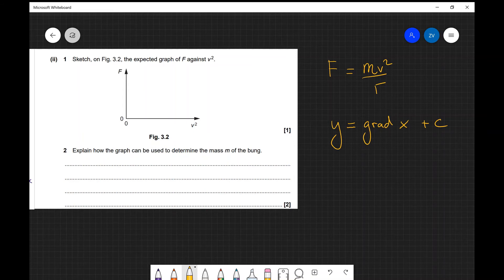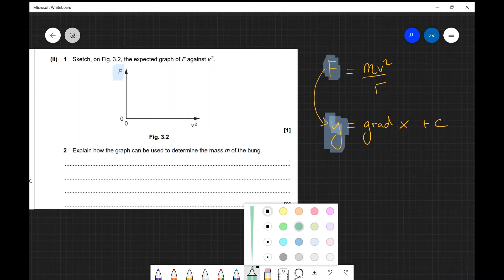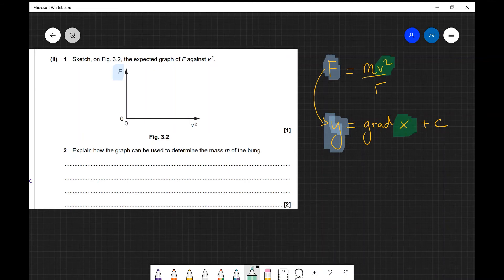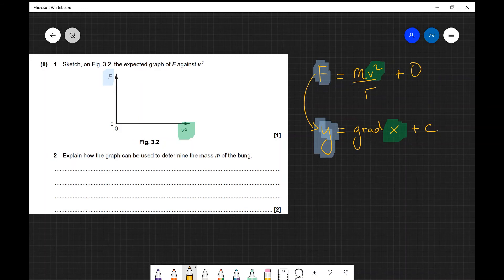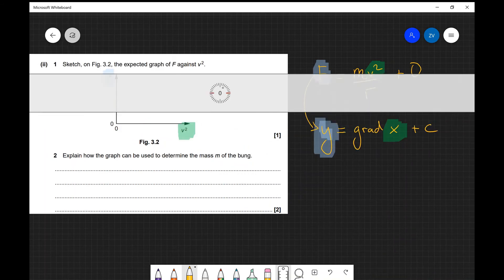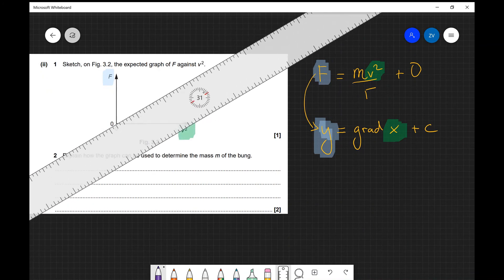In this case I have F on the y-axis, we have v squared on the x-axis, and our intercept should be zero. So because of that we are expecting the graph to be a straight line through the origin.